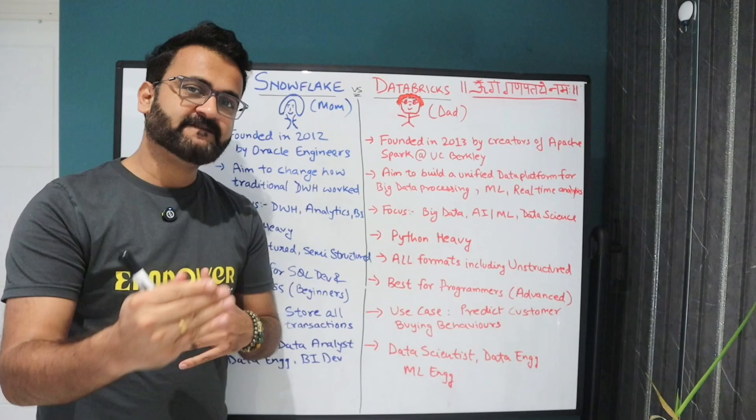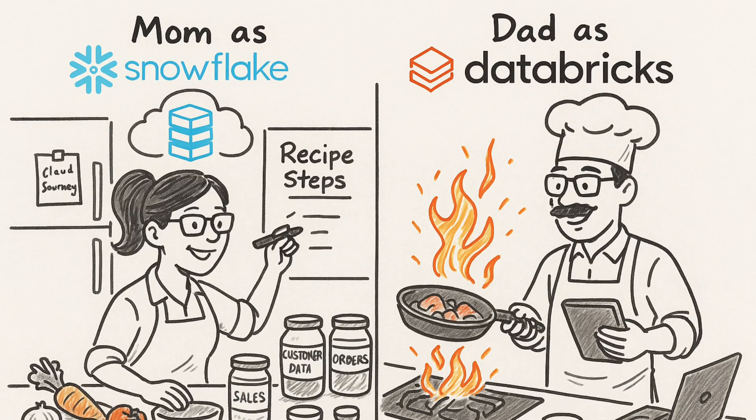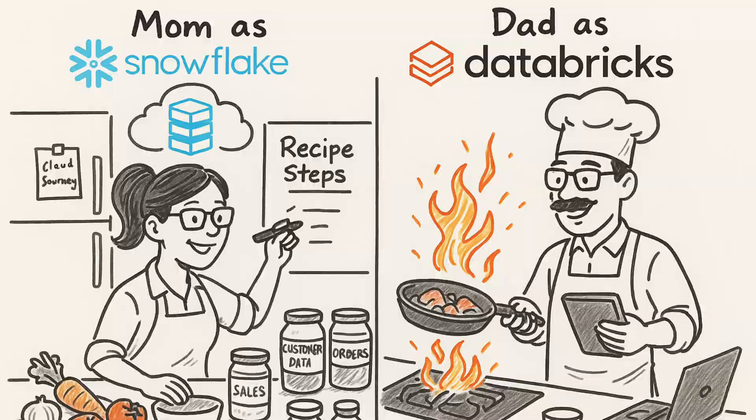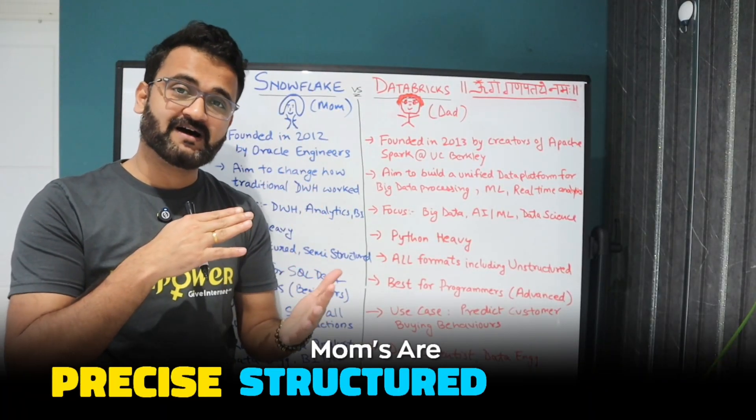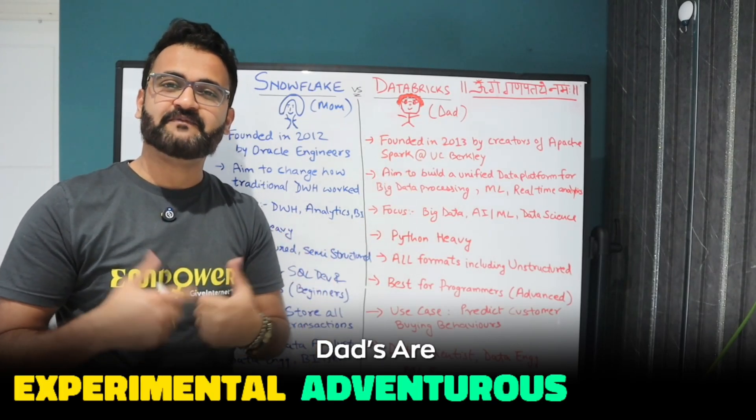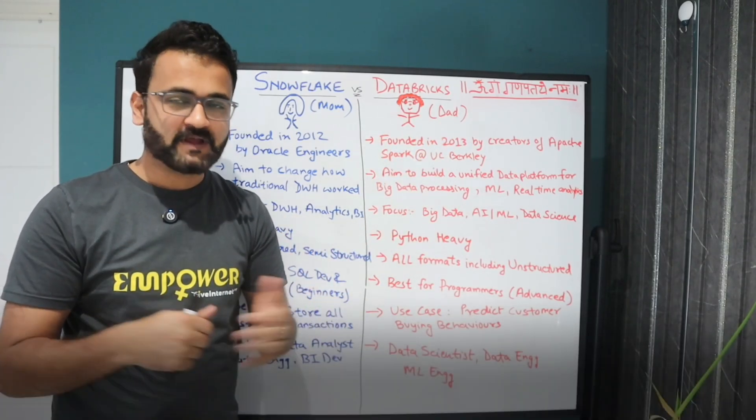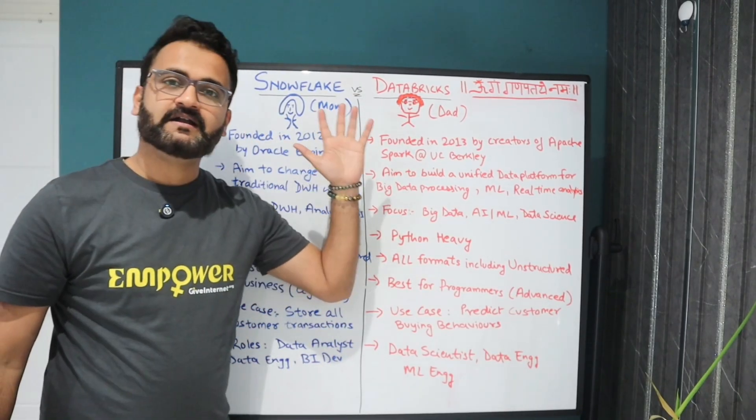So friends let's carry on from our real life analogy. In this case Snowflake acts as your mom while Databricks acts as your dad. Moms are precise, structured, disciplined whereas dads are more experimental, adventurous, playing with new things. And that's the basic difference between Snowflake and Databricks.